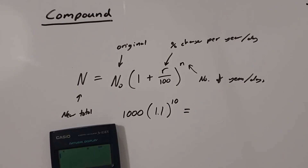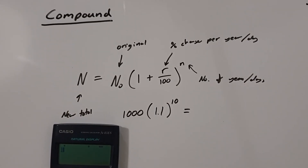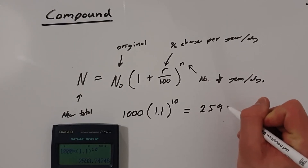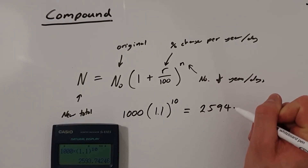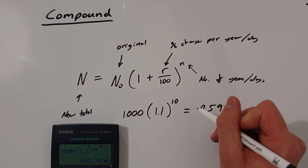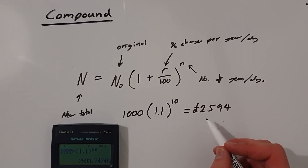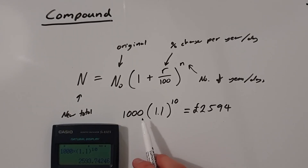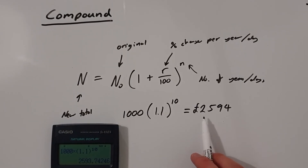So we put into the calculator: 1000 times, open brackets, 1.1, close brackets, all to the power of 10. And that gives us £2,594 if we round to the nearest whole number. So this means if we had a compound interest account and we put £1,000 in there at the start for 10 years with an interest rate of 10%, then after 10 years we would have £2,594.